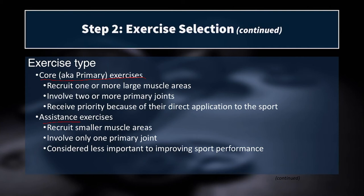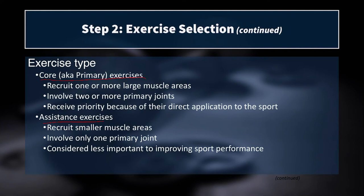We also have assistance exercises, which often recruit smaller muscle areas, may involve only one primary joint, and are considered less important to improving sport performance. What counts as an assistance exercise varies by coach and sport. For instance, for a powerlifter, pull-ups might be an assistance movement because they don't directly relate to squatting, benching, or deadlifting — however, they strengthen important musculature that balances all the bench pressing and could aid the deadlift. Likewise, a dumbbell goblet squat might be called an assistance lift even though a barbell back squat is a primary lift, since it typically uses lower loads, slightly higher reps, and adds volume when the lower back is already fatigued from primary sets.